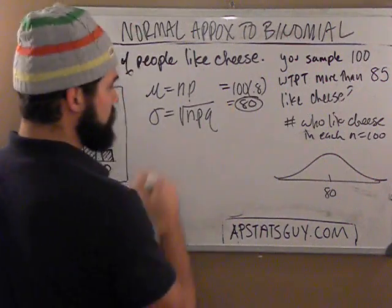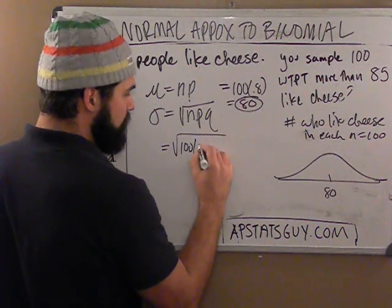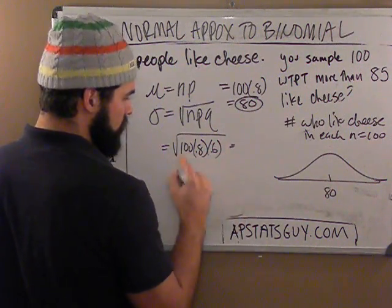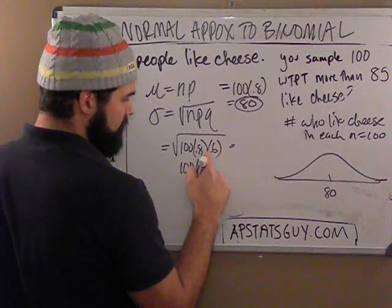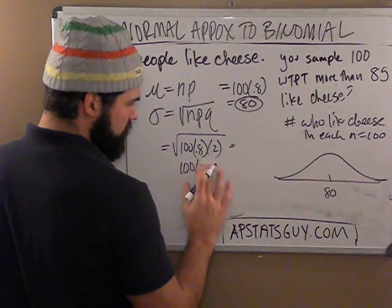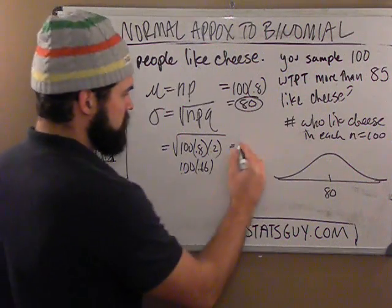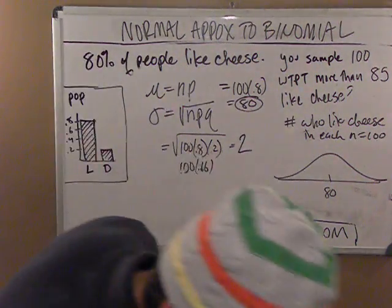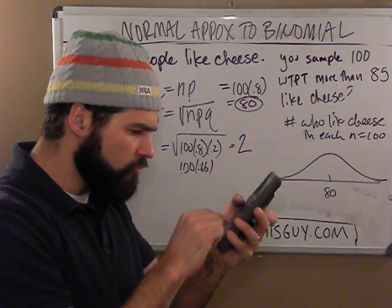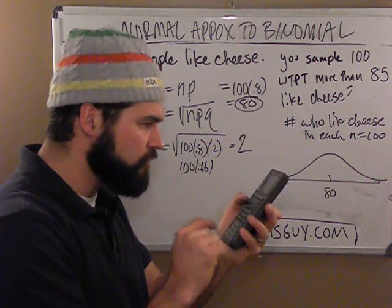The standard deviation is the square root of npq. So the standard deviation here would be the square root of 100 times 0.8 times 0.2. Let me double-check with my calculator: square root of 100 times 0.8 times 0.2 equals 4. The standard deviation is 4.